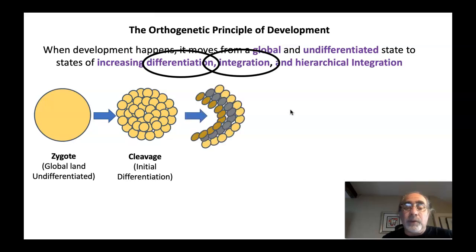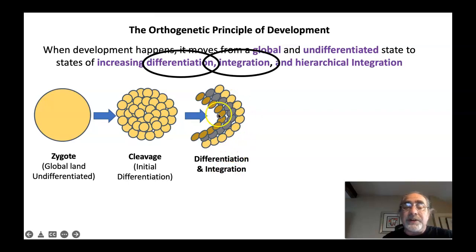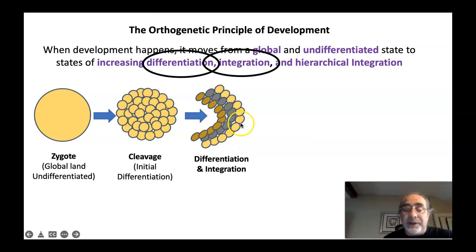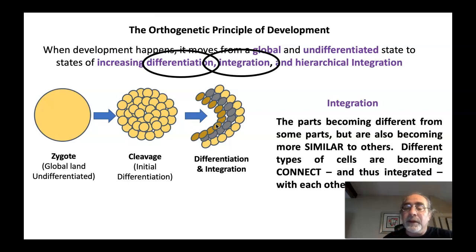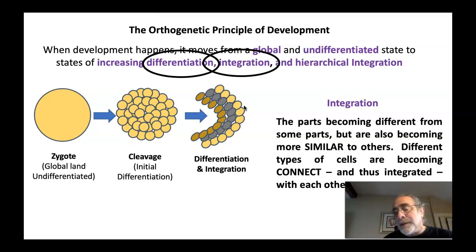Let's move on to 'integration.' With further differentiation and specialization, these cells here are becoming different from these cells here, which are different from these cells here. The skin cells are different from the heart cells, different from the skeletal cells, different from the endocrine cells, etc. There's further differentiation in the process of specialization. But also, in order for differentiation to occur — in order for the heart cells to be different from the skin cells — the heart cells have to become more similar to each other and more connected to each other. This is integration: the parts are becoming different from other parts, but they're also becoming more similar to each other, integrated and connected, to begin to form different organs and to begin to specialize.